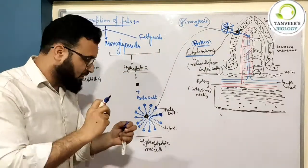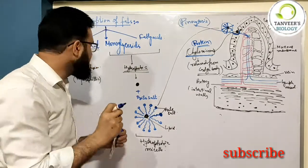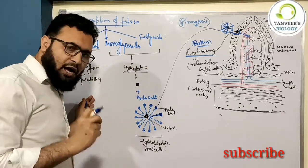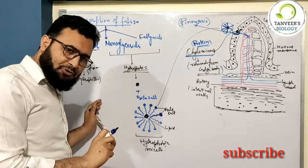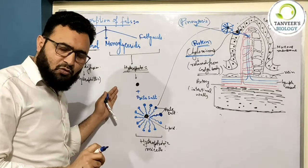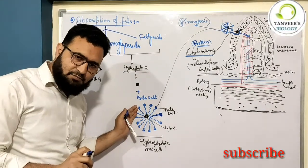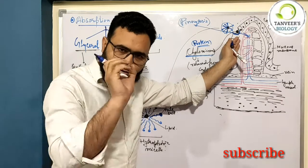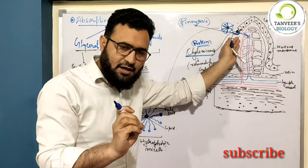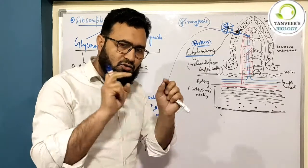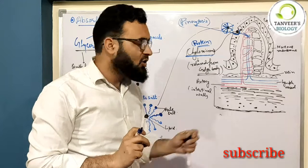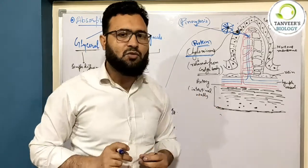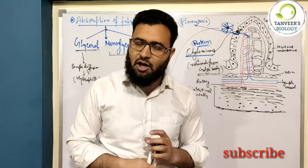Let me repeat this whole lecture. Fats are broken into three products: glycerol, monoglycerides, and fatty acids. Glycerol is hydrophilic — simply absorbed by simple diffusion. Monoglycerides and fatty acids are hydrophobic — simple absorption is not possible. Bile salts form hydrophobic micelles. The micelle undergoes pinocytosis at the mucosal cell, which releases a special protein called chylomicron — also known as clathrin-coated vesicles. These are absorbed and go into the lacteal, the lymphatic vessel. From here it goes into the bloodstream. And in this way the absorption of the fats is complete.